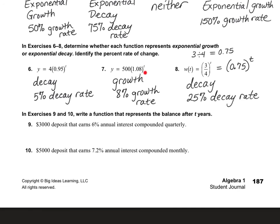For number seven, I got growth and it's an 8% growth rate because it's 8% above 100%. And for number eight, it's a decay and it's 25% off of 100 because that would give me 0.75. So 25% decay rate.